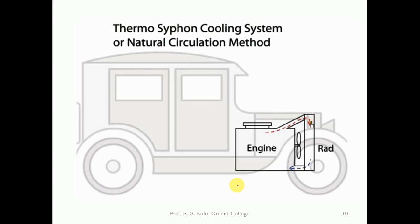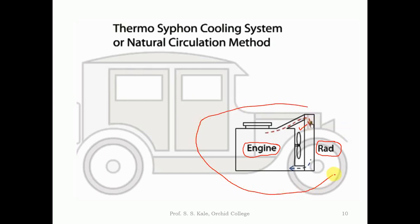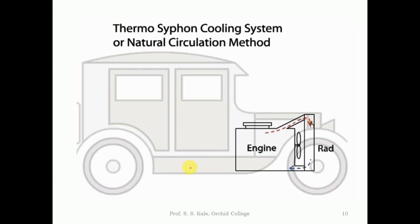In this figure I have shown a jeep or vehicle, with the engine part highlighted. This is the engine of the vehicle, and this frontal part is called the radiator, over which air can flow. There is also a radiator fan present. This simple diagram shows the location of the thermosyphon cooling system, which is provided at the front. Importantly, this system does not use any external device like a pump to move the water.